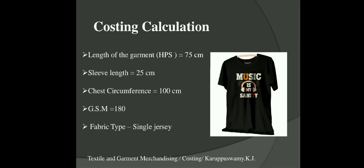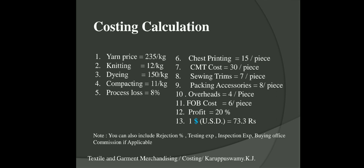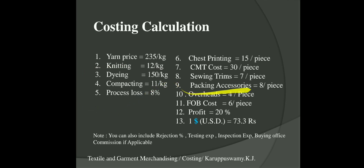In this example the raw material cost is the yarn cost, which is 235 rupees per kg — these values are taken just for calculation purposes. Conversion cost covers everything from knitting through to overheads. Knitting is 12 rupees per kg; dyeing for dark shade is around 140–150 rupees, with lower costs for medium and light shades. Any all-over printing can be included after dyeing, and compacting is 11 rupees.